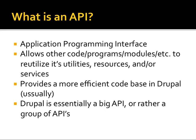Drupal itself is essentially a big, giant collection of APIs — from the field API to the database API to the batch API to its entire module system. The entire hook system is an API. So Drupal is really built from the ground up as an API. Even the whole platform itself is almost an API for building websites and interacting on the web.